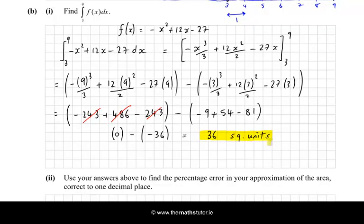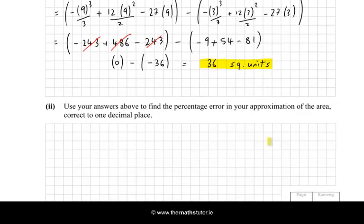So use your answers above to find the percentage error in your approximation of the area. So the error is the difference between the actual and the approximate, so it's 1 square unit. And the percentage error then will be, we would compare the 1 with the actual error, which is 36, and then multiply it by 100 over 1.